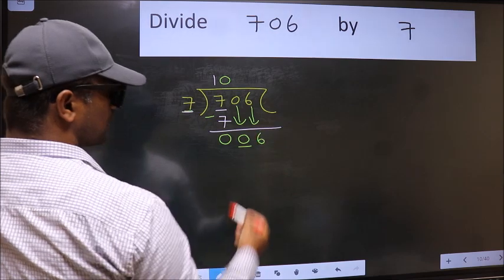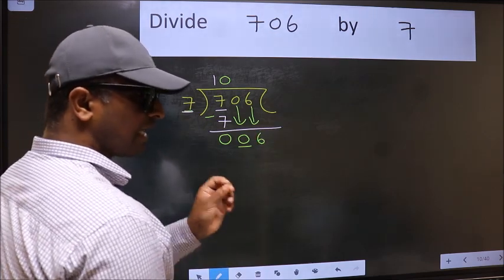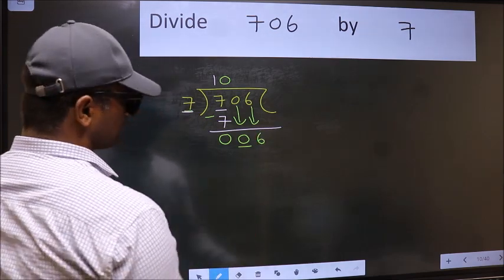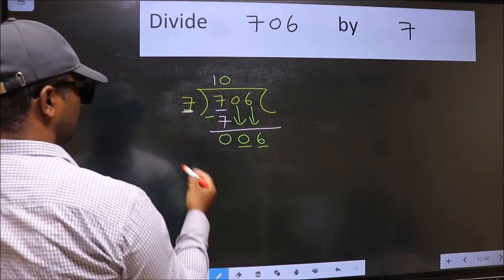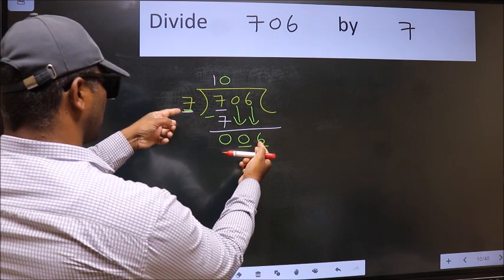After this step, the mistake happens. And the mistake is this. Here we have 6 and here 7. 6 is smaller than 7.